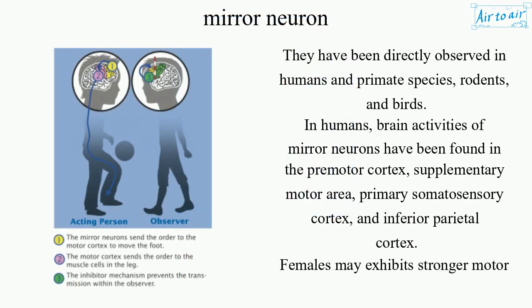They have been directly observed in humans and primate species, rodents, and birds. In humans, activities of mirror neurons have been found in the premotor cortex, supplementary motor area, primary somatosensory cortex, and inferior parietal cortex.